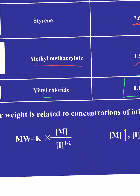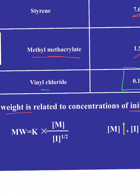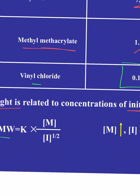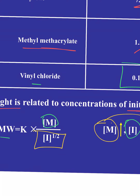We have a relationship between molecular weight and the concentrations of initiator and monomer. The molecular weight is proportional to the concentration of the monomer — more monomer, longer chains. More importantly, it's also proportional to the inverse square root of the initiator concentration. So to increase molecular weight, you can increase monomer concentration or decrease initiator concentration. If you want to go to a million, use very little initiator. If you want 10,000, you can have a lot more initiator.